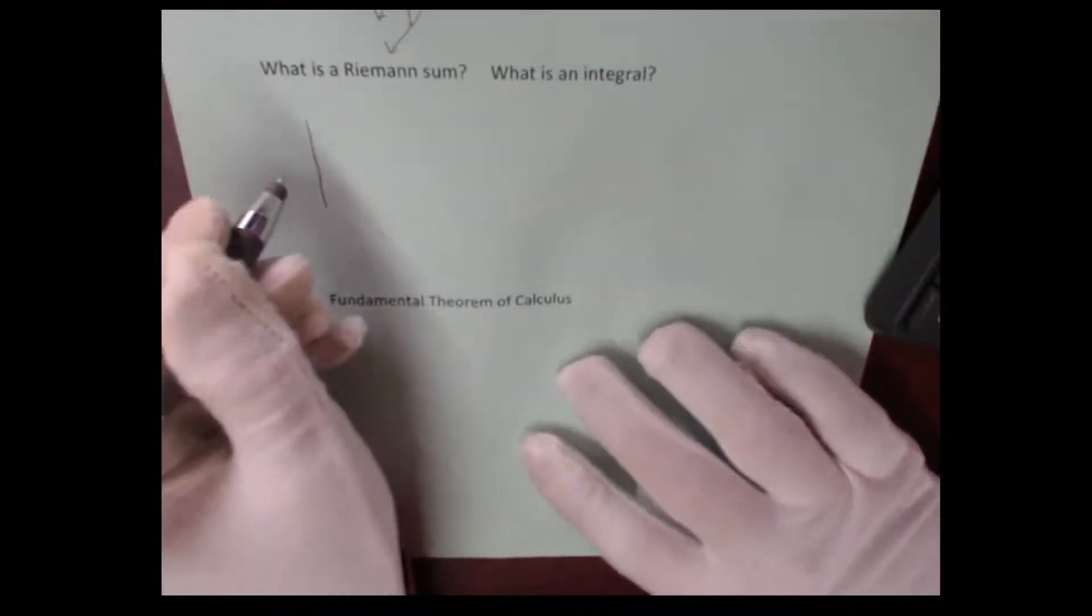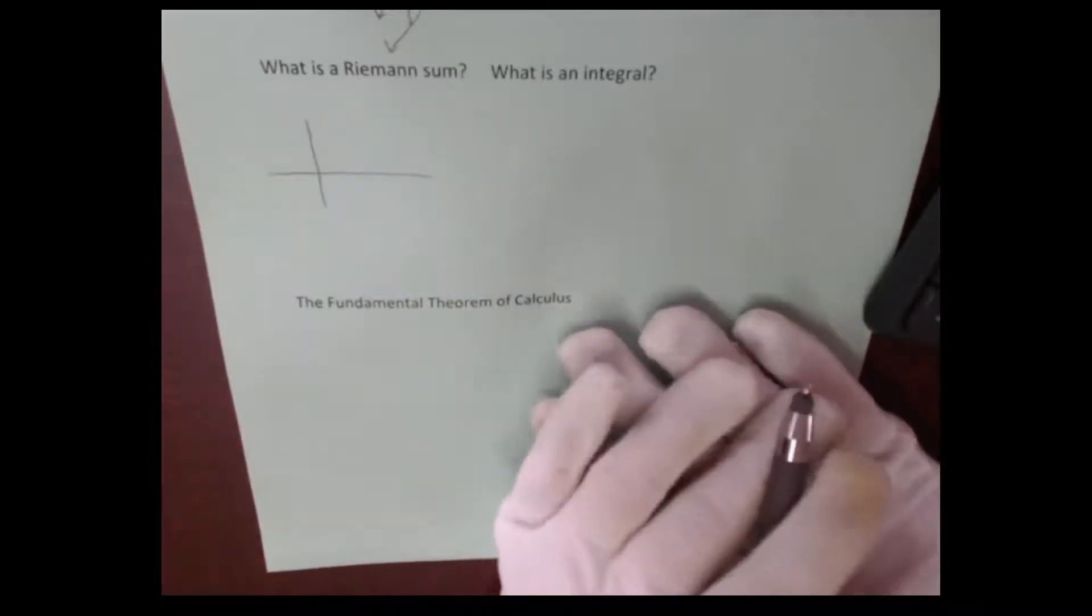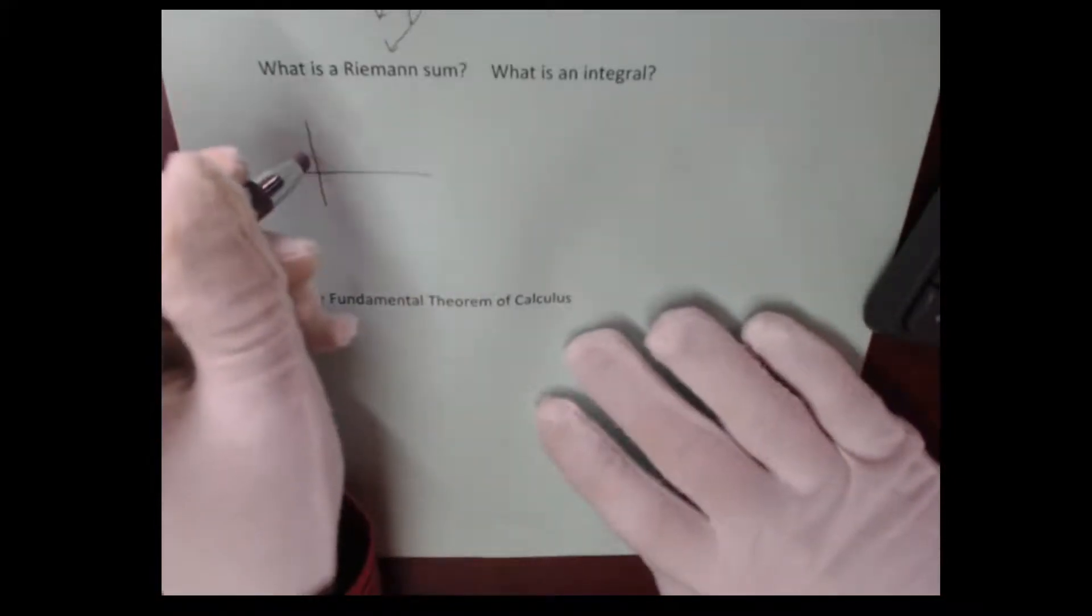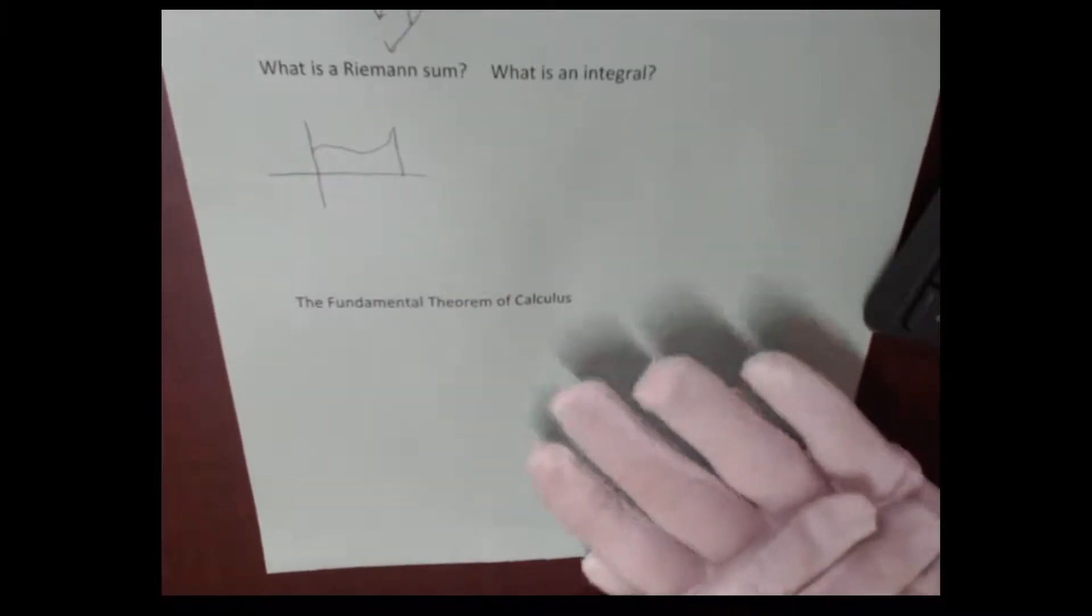So for some areas, some areas are easier to calculate than other areas. A rectangle or a triangle, it's pretty easy to calculate. But what if I have some kind of curved area? How can we find that area?